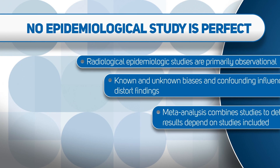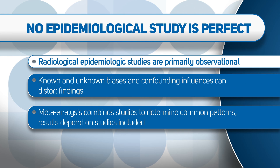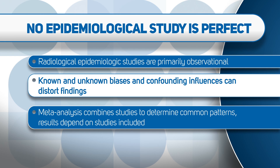Of course, no study is perfect. Radiological epidemiologic studies are primarily observational — we have to play the hand we're dealt. Observational studies are not experimental studies. There are always potential known and unknown biases that we try to minimize, as well as confounding influences. These are potential sources of error that can distort the study findings, no matter how much you try to avoid them. And there are intrinsic limitations to study design, as just mentioned.